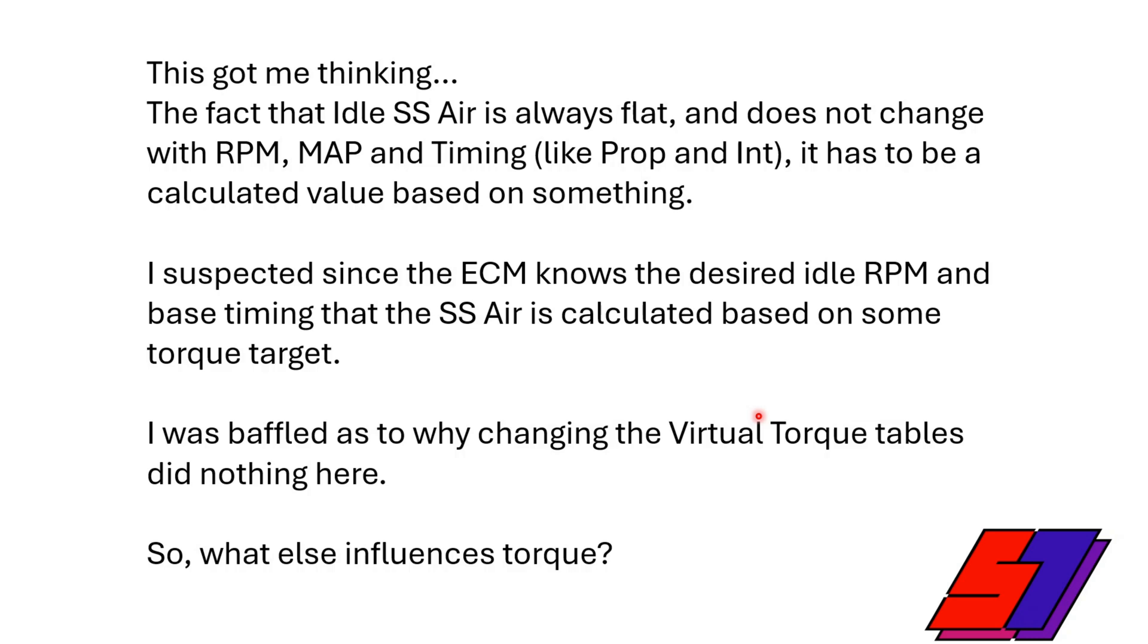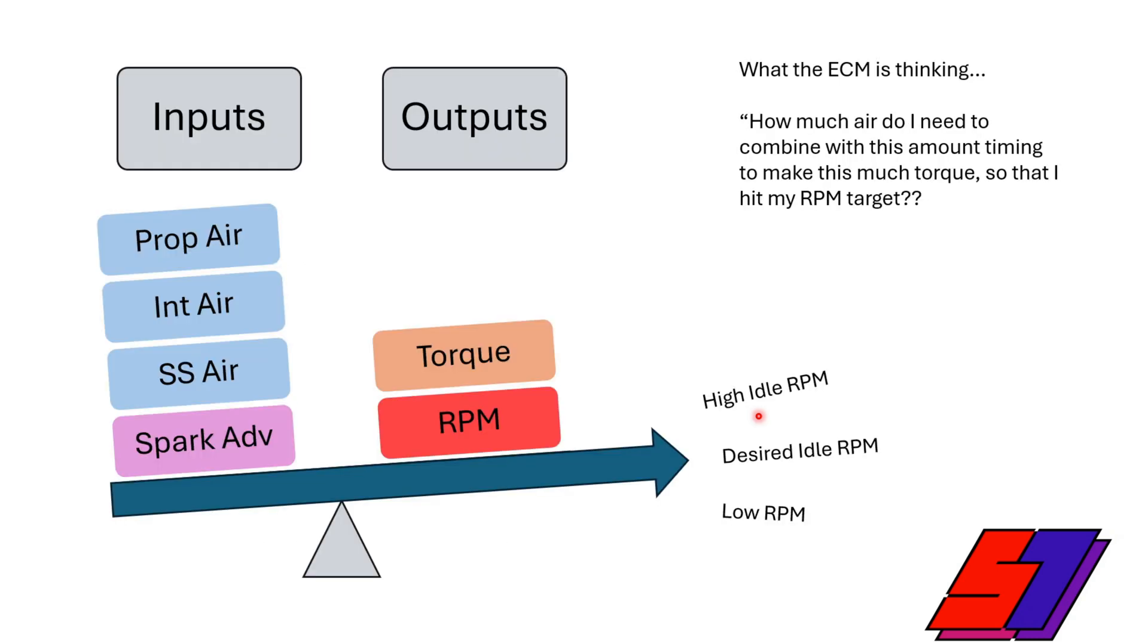So you know, the fact that the idle, the steady state air, is always flat, it's not fluctuating with RPM and MAP and timing like everything else. There's something in the background controlling it, like it's a predetermined kind of calculated value. And so my thinking was 'well we know the computer knows the RPM that we want and it knows the timing we want it to use, so it has to bridge that gap. How much air then do I need to make the certain amount of torque to hit that RPM?' And again, I'm like 'why isn't virtual torque doing anything?' So like I'm thinking, and I went to bed and I woke up and I'm like 'I got an idea.'